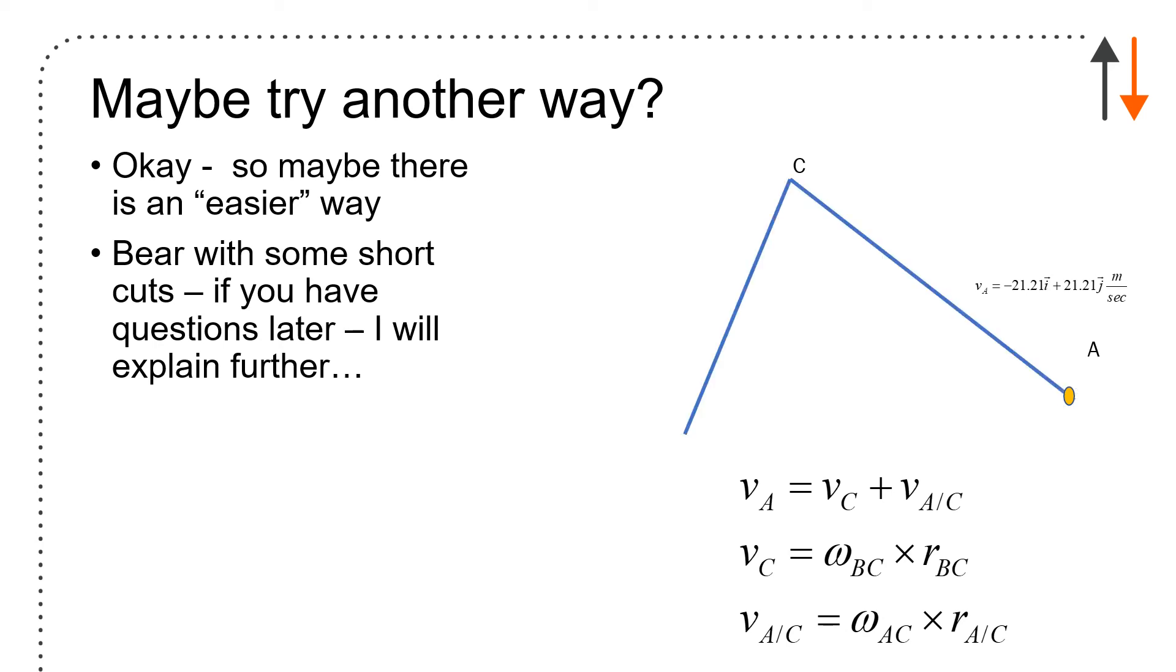It goes from A to C. It's going up. I kind of expect that's the direction. I will calculate from all of these terms an omega AC and an omega BC because I have all of the linkage arms. Velocity of A equals velocity of C plus velocity of A with respect to C.